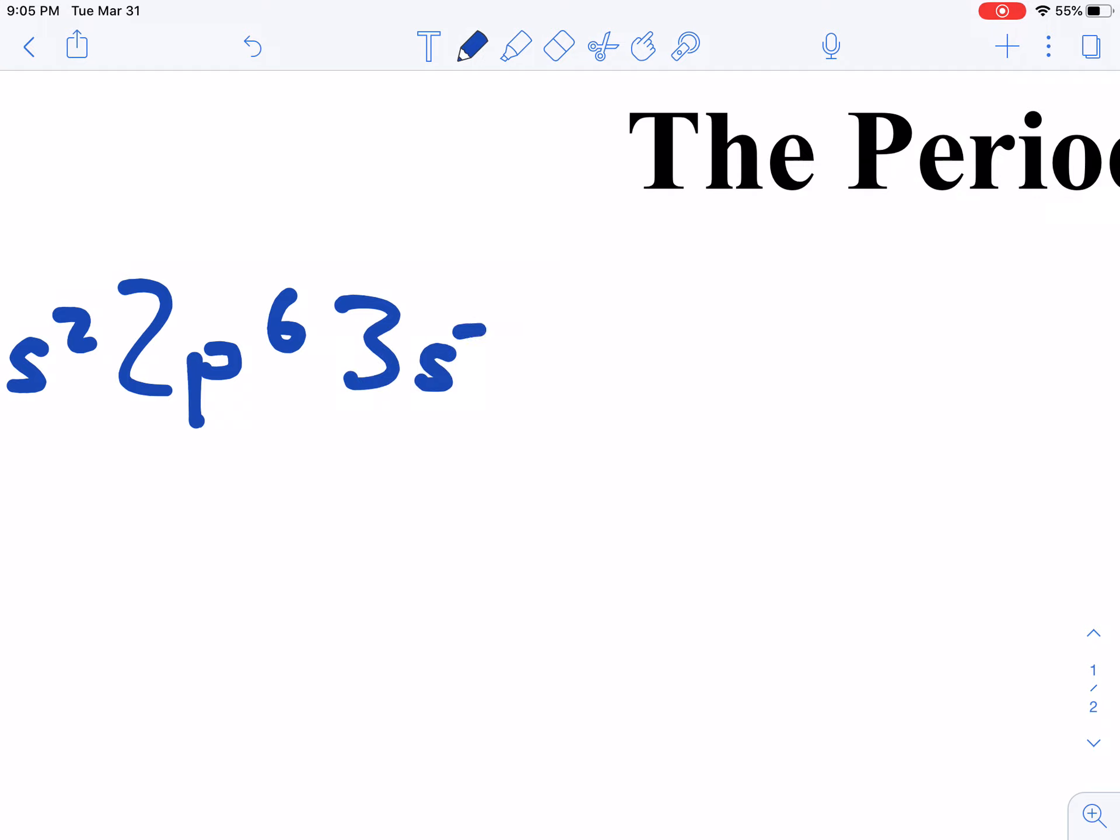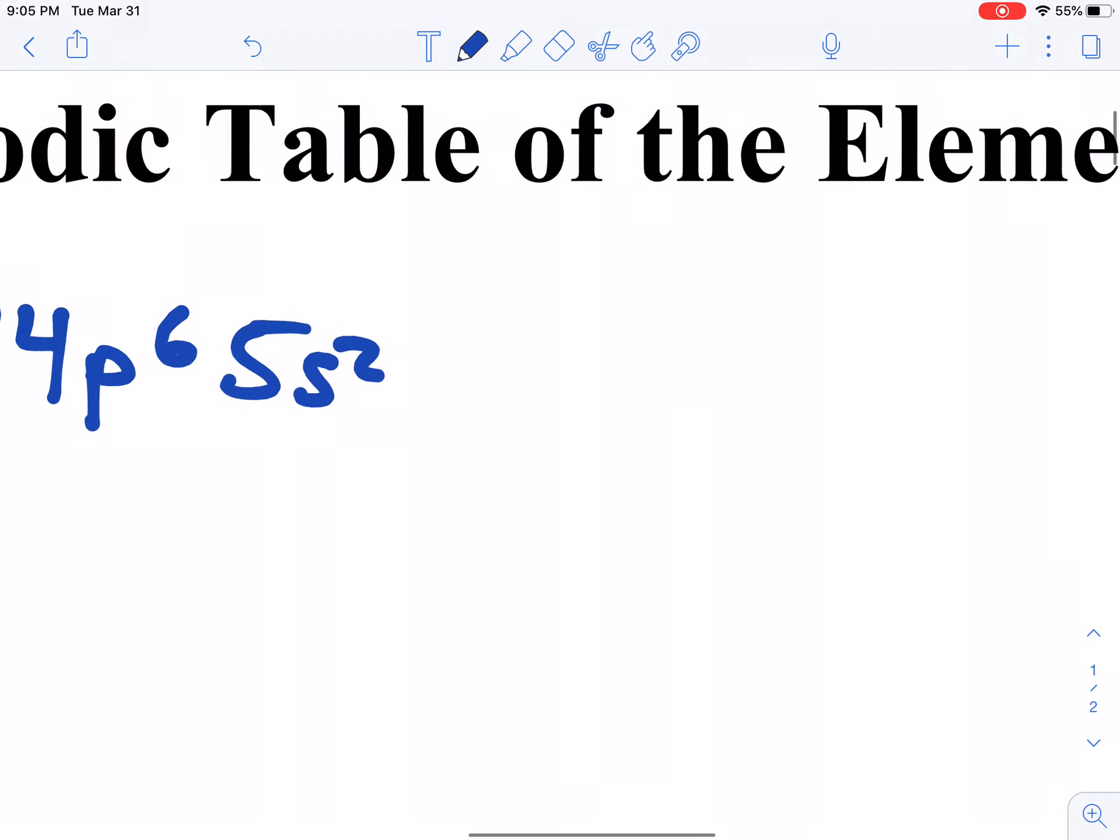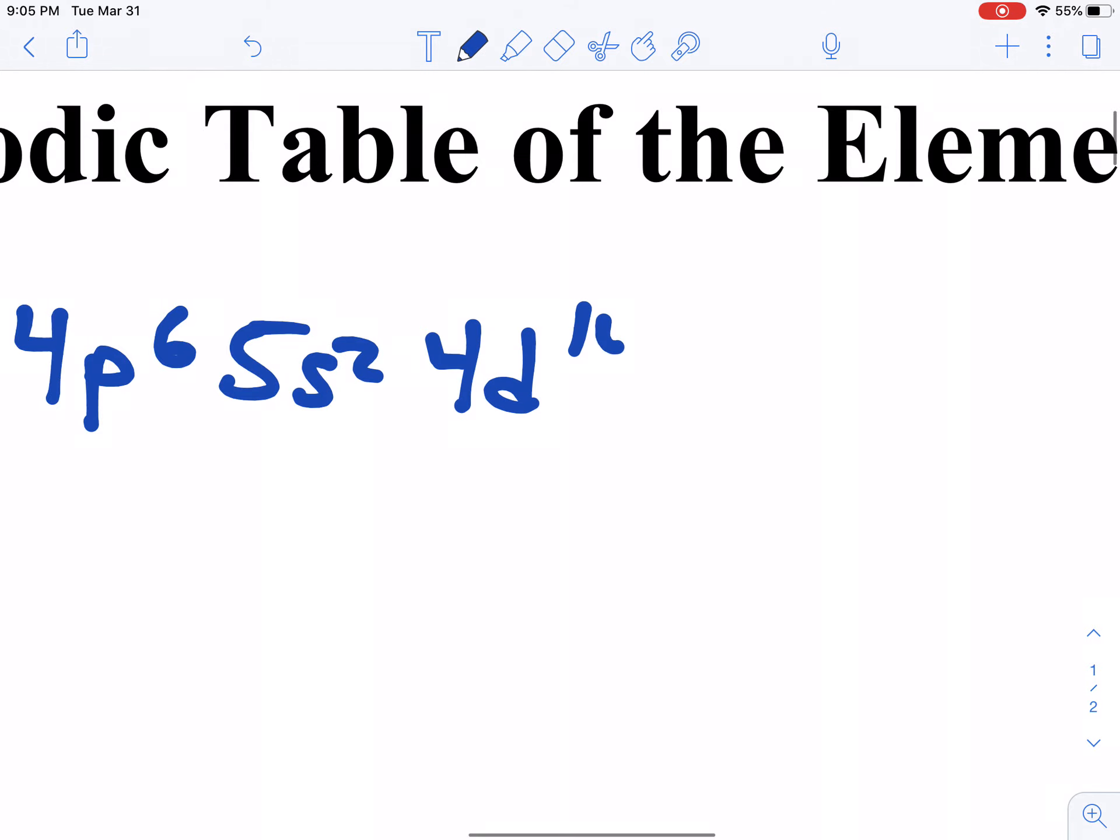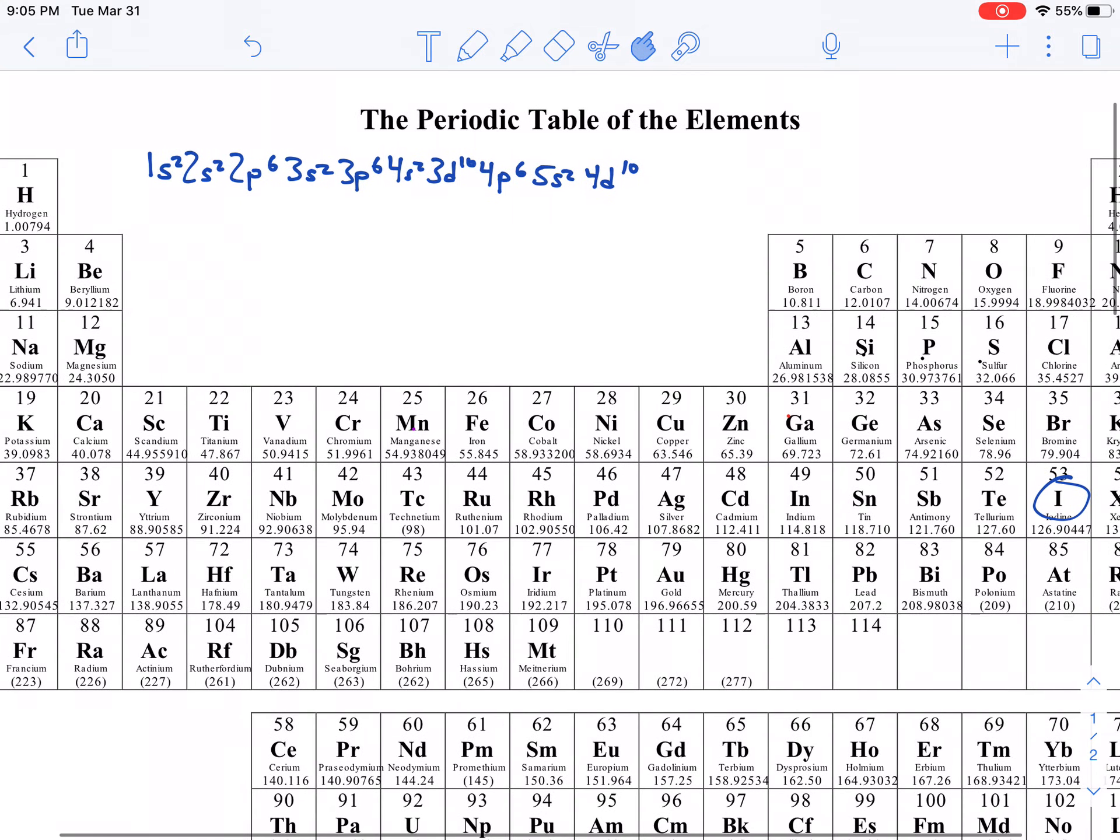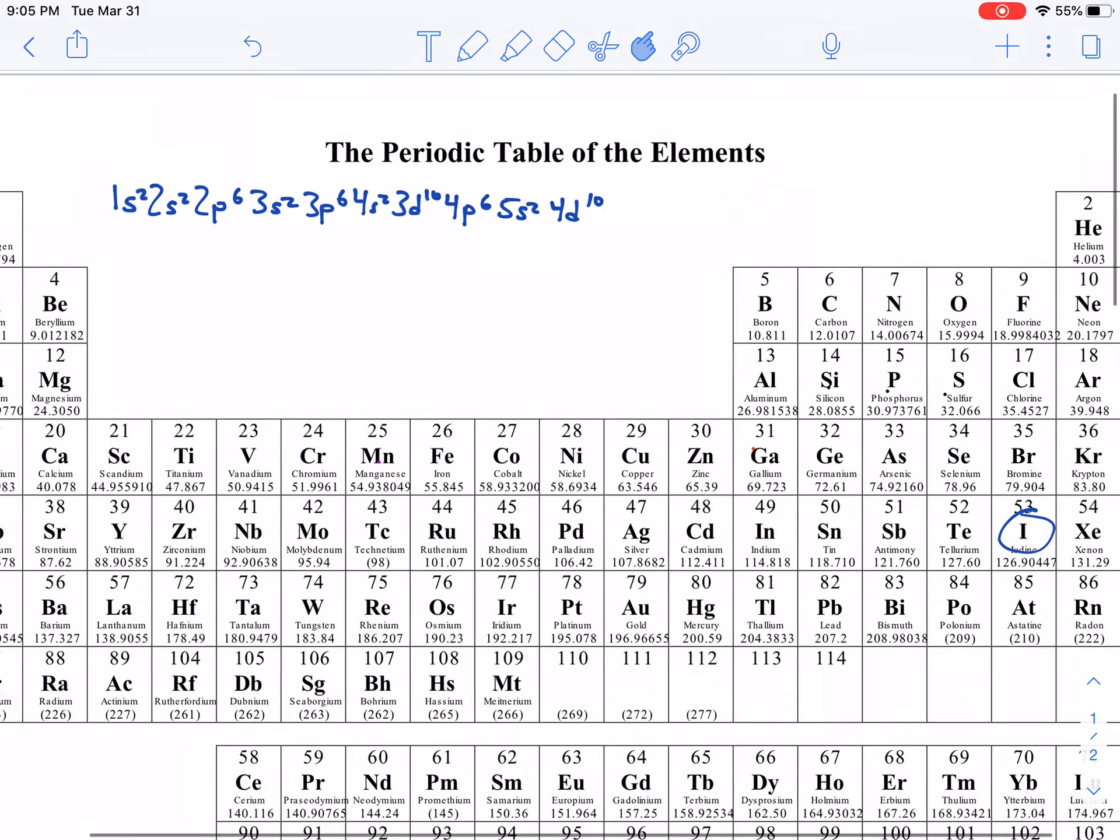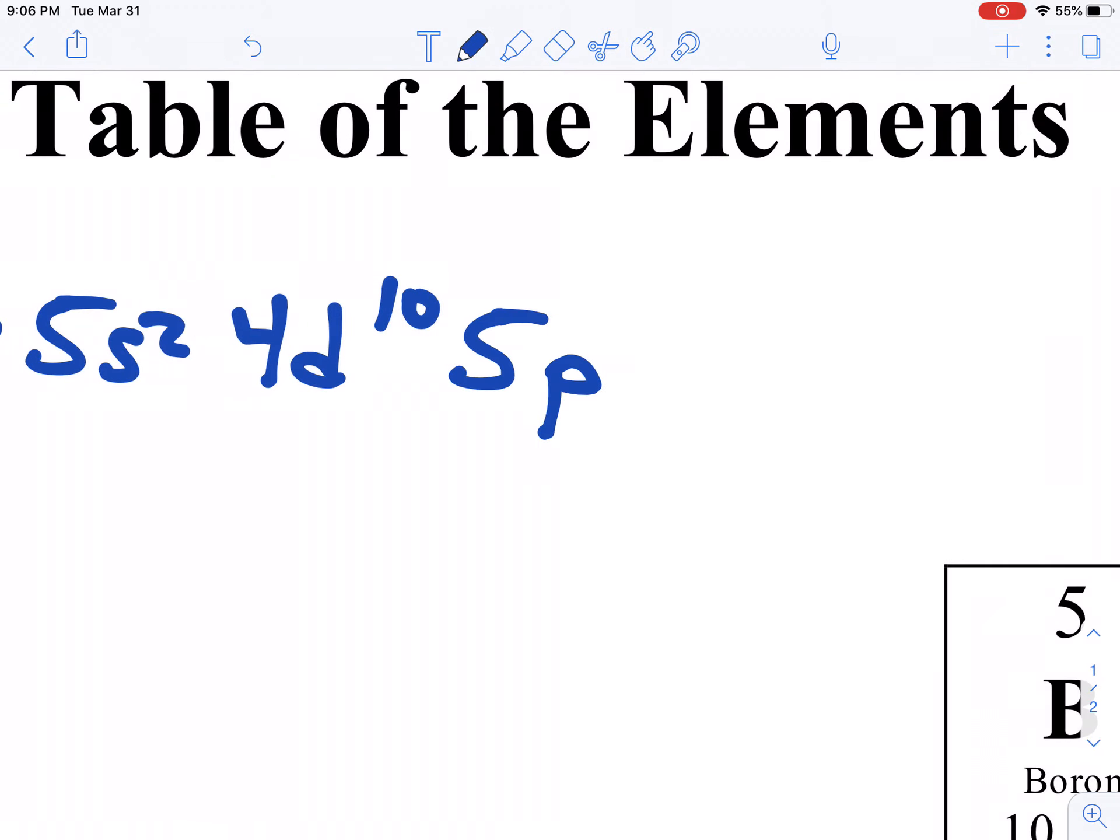So, we're doing the 1s2, 2s2, 2p6. Again, if you want to pause and get this down and then check your work, feel free. After 2p6 is 3s2, 3p6. Then we're 4s2, we are then to 3d10, 4p6, 5s2, 4d10. And if we look at iodine, iodine is in the fifth energy level, and it is the fifth element, so that is 5p5.